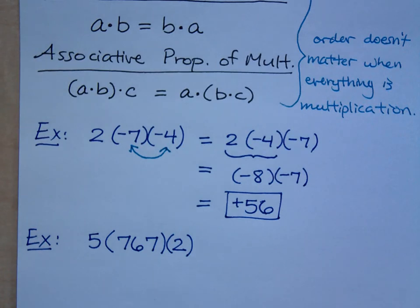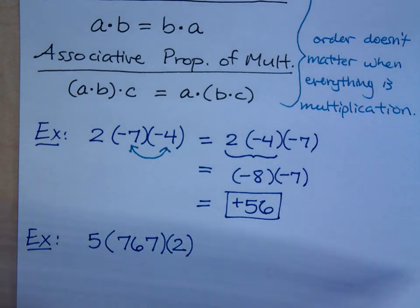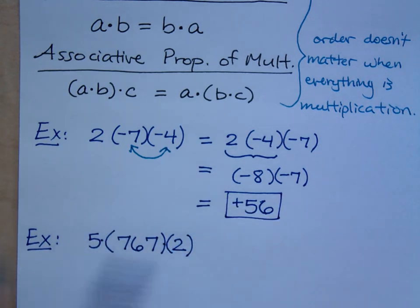Do you know 5 times 767 off the top of your head? No. Go with what you do know. Since this is all multiplication here, I'm going to rearrange this. How do you think I'm going to rearrange this?